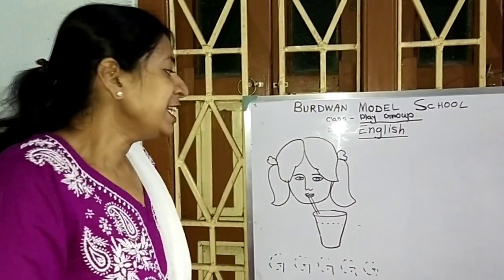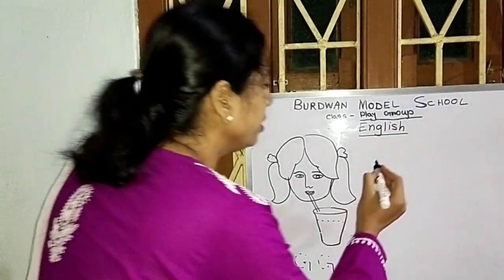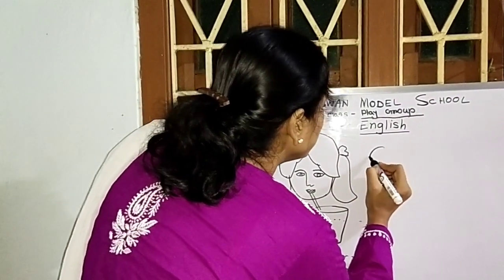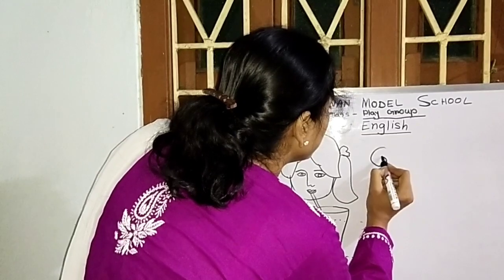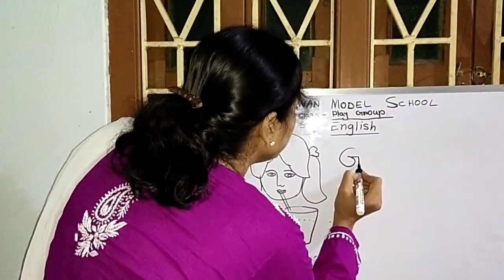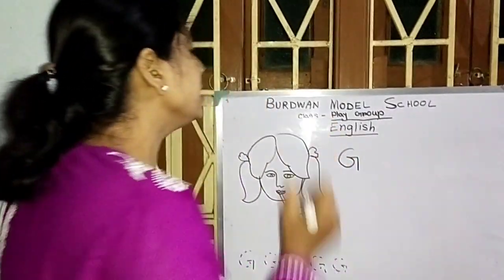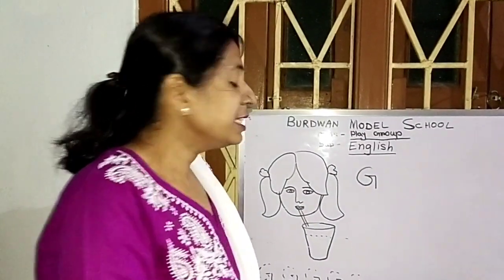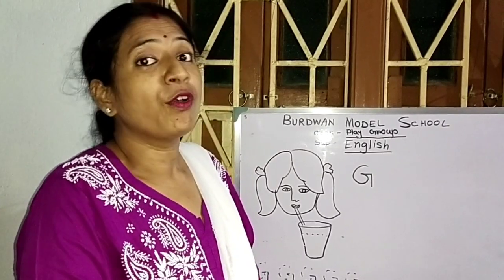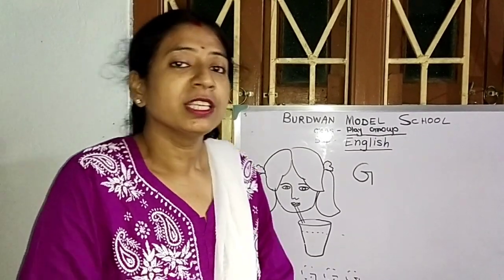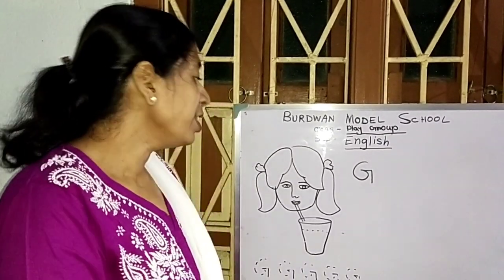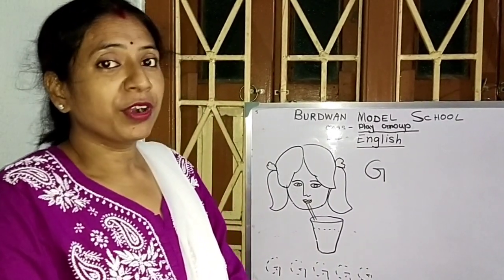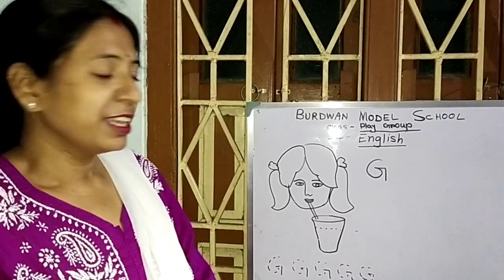So we learn today alphabet G. G for — you know — this is G. G for guard. G for glass. G for goat. G for giraffe. G for grass.